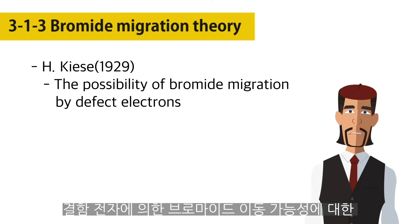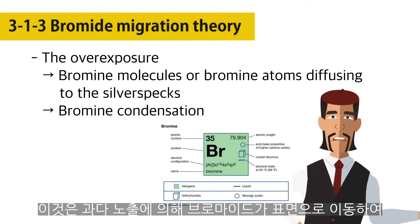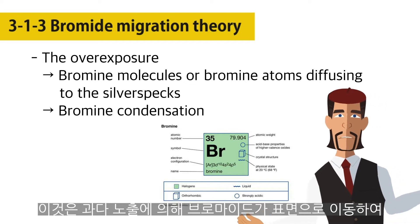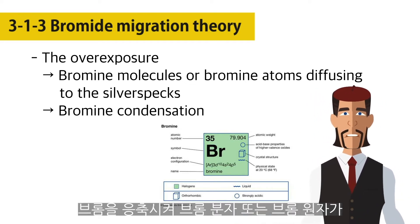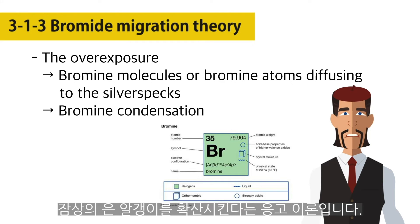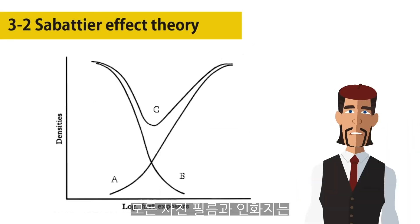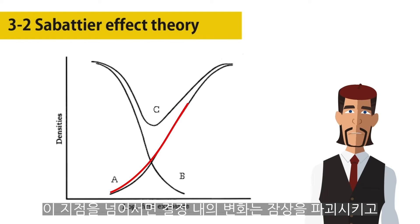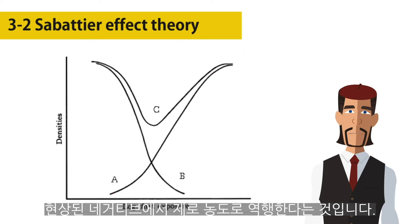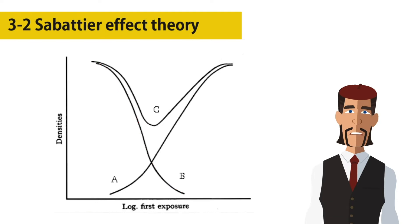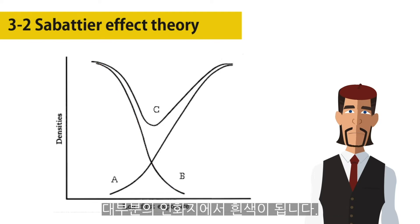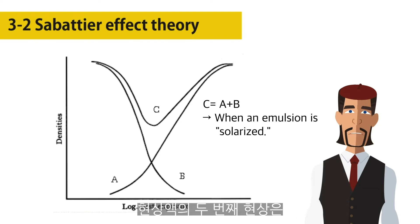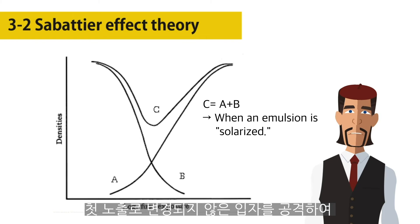H. Kieser published in 1929 a paper speculating about the possibility of bromide migration by defect electrons. Bromide migration to the surface by overexposure forms a bromine condensation, resulting in bromine molecules or atoms diffusing to the silver specks of the latent image. All photographic films and papers have a maximum density point; when they pass this point, changes within the crystals cause the latent image to be destroyed and reduce the area back towards zero density on the developed negative. Those areas become translucent on film or white on most photo papers. A second development in a surface developer will attack those grains which remained unchanged by the first exposure, so that an image reversal will occur.